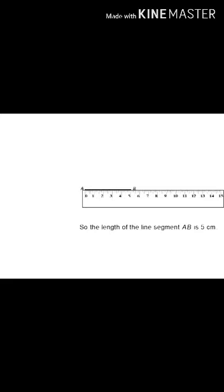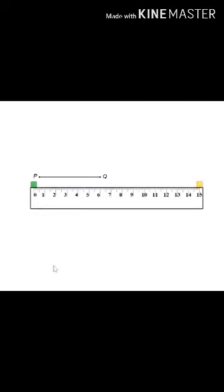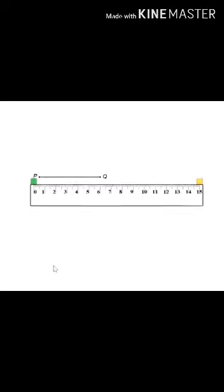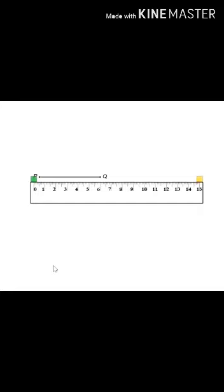As you can see here AB is equal to 5 cm. Now, let us learn to measure the length of the line segment PQ. Place the ruler just below the line segment PQ.